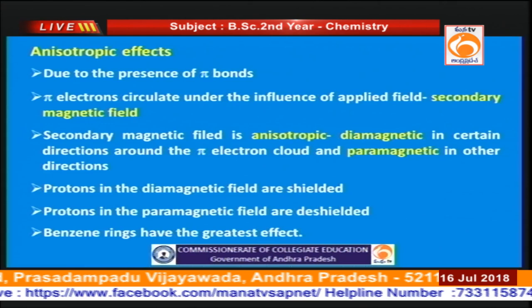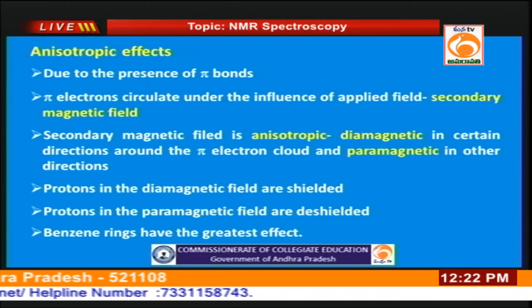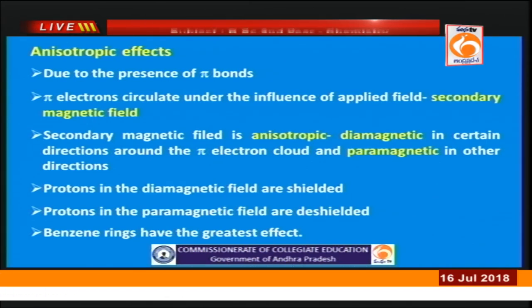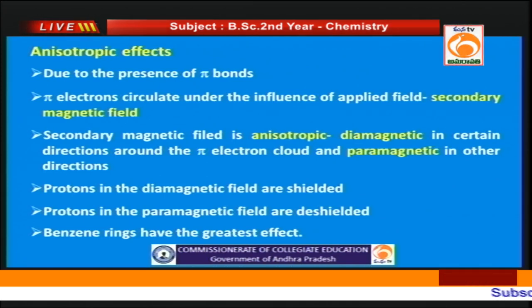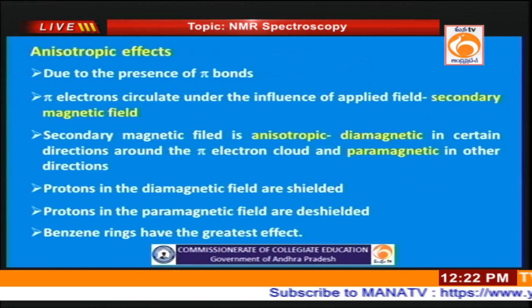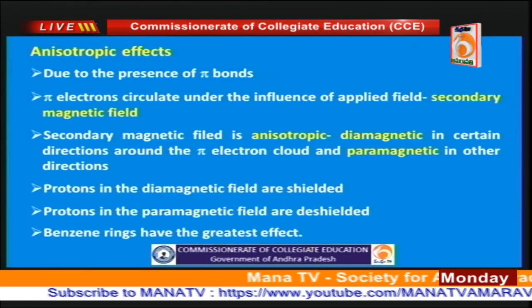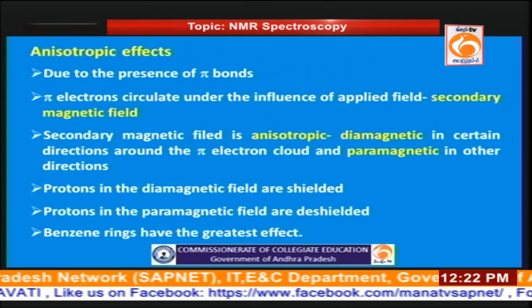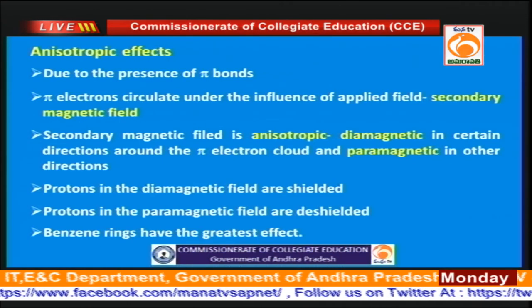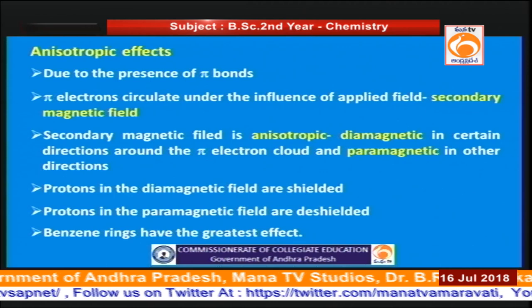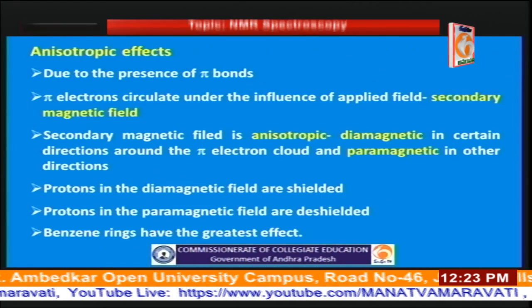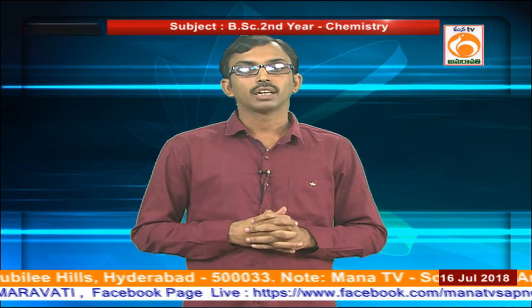Now let us discuss the anisotropic effects. Anisotropic effects are mainly due to π electrons, because π electrons undergo circulation in the presence of a strong magnetic field and generate a secondary magnetic field. This induced magnetic field is anisotropic — meaning it is not uniform around different regions. It will be diamagnetic in certain regions and paramagnetic in certain regions. Protons in the diamagnetic field are generally shielded, whereas protons in the paramagnetic field are deshielded. This effect is generally observed in benzene rings.